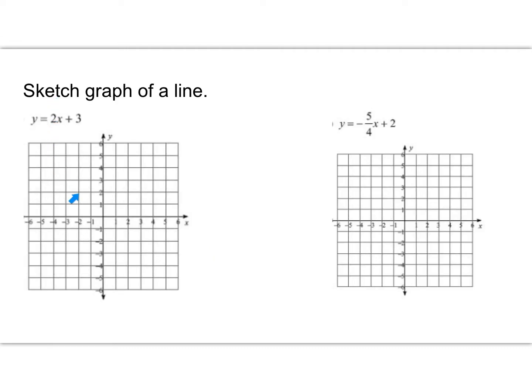Here I have two equations. This one says y equals 2x plus 3, and we are going to graph it. This is in what's called slope-intercept form, or y equals mx plus b.